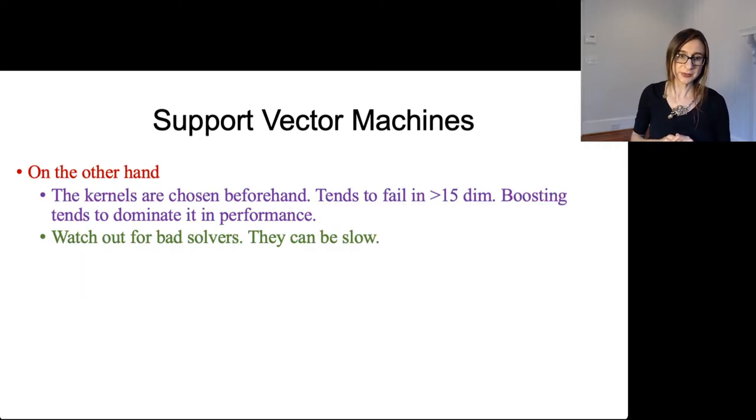On the other hand, SVMs do have some disadvantages. The kernels that we haven't talked about yet, but I'll tell you next. The kernels are usually chosen beforehand by a human, by an analyst. And because of that, the kernels essentially define a distance metric in a high dimensional space. When humans choose distance metrics in high dimensional spaces, it doesn't always work out so well because humans aren't great at choosing high dimensional functions in their heads.